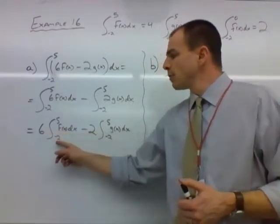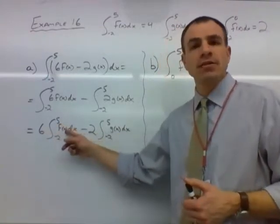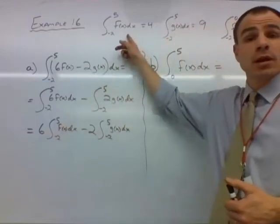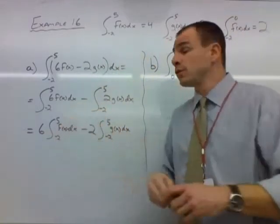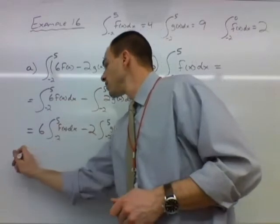We have 6 times the integral from negative 2 to 5 of f(x)dx. That was given to us up here. That's 4. So by substitution this is just going to be 6 times 4.